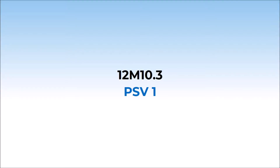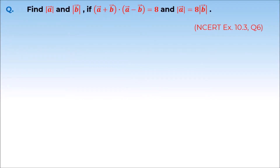Now the concept we have studied, we will solve a question based on it. In this question, we have to find out the magnitude of A vector and B vector, where A vector plus B vector dot A vector minus B vector is equal to 8, and the magnitude of A vector is equal to 8 times the magnitude of B vector.